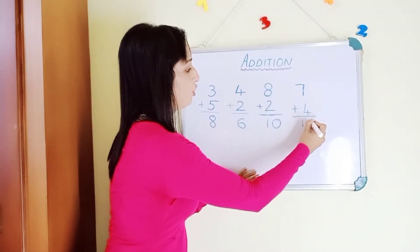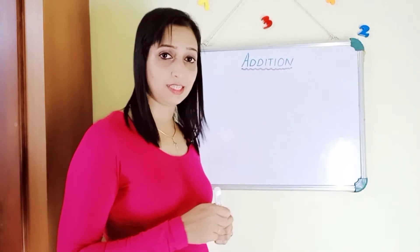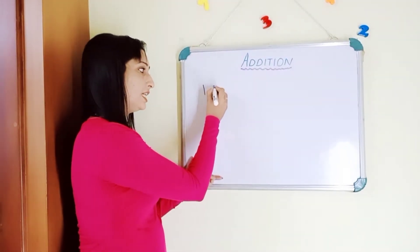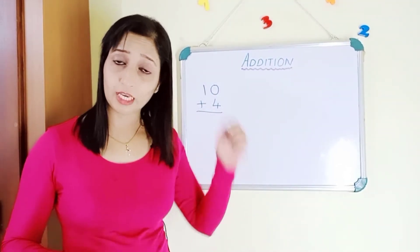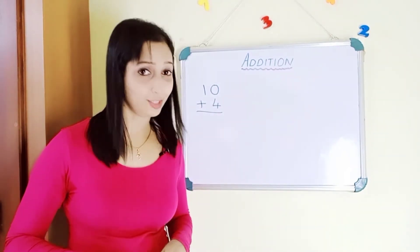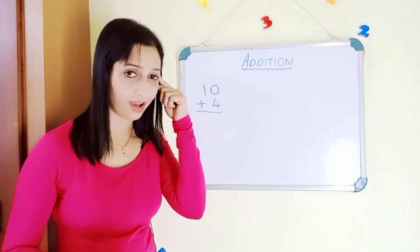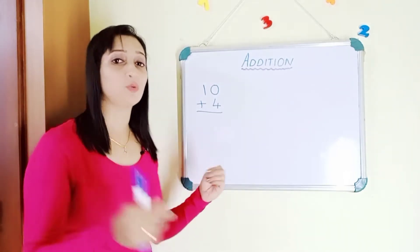Now what happens when a two-digit number is added with a one-digit number? Let's go through examples. The first example is ten plus four. We do it in the same method — keep the bigger number in your mind and the smaller in your hand. Ten is the bigger number, so ten in your mind, four in your hand. Count forward after ten: eleven, twelve, thirteen, fourteen. The answer is fourteen.